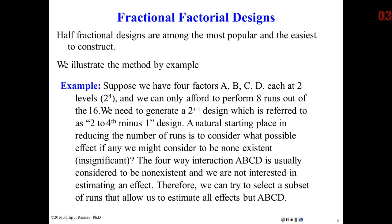We assume that the largest interaction is of no interest. So in my example on slide three, I have four factors, each at two levels. So a 2 to the fourth factorial has 16 runs. But suppose due to constraints, I can only do eight runs. I can do half.